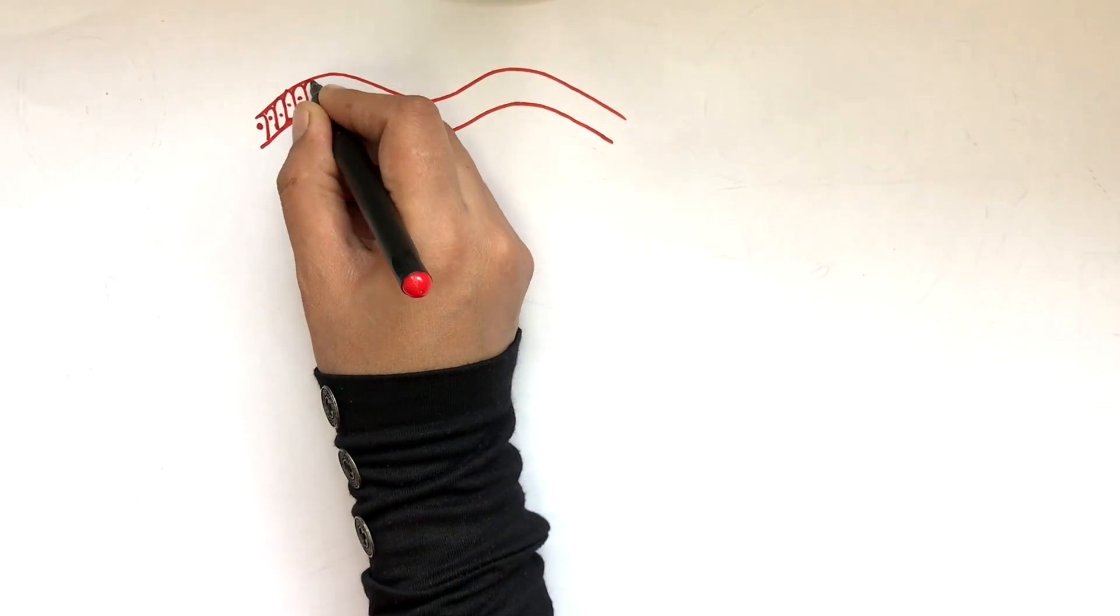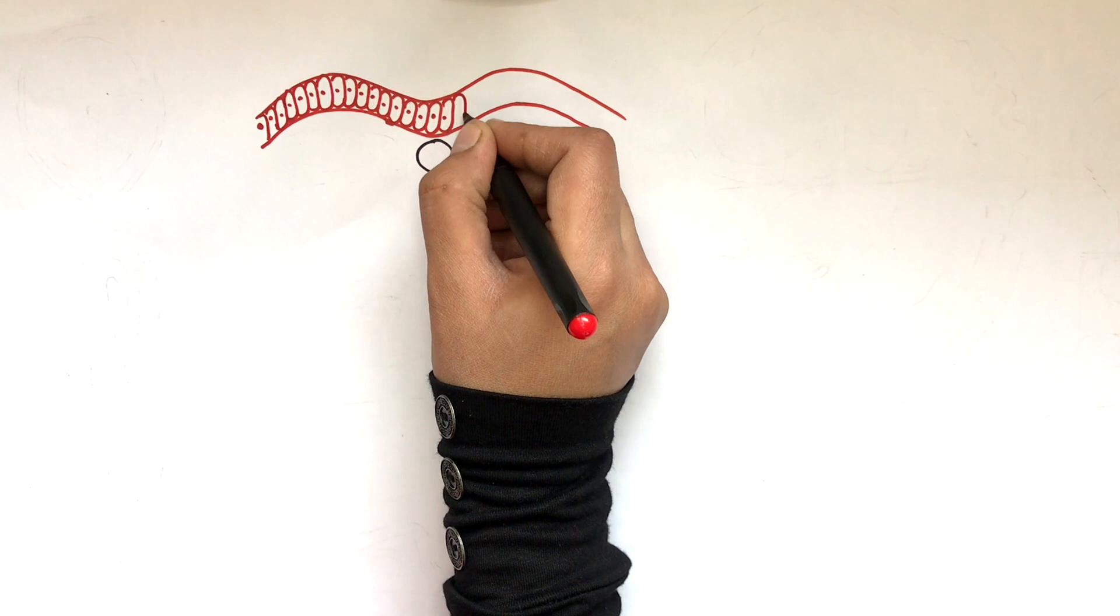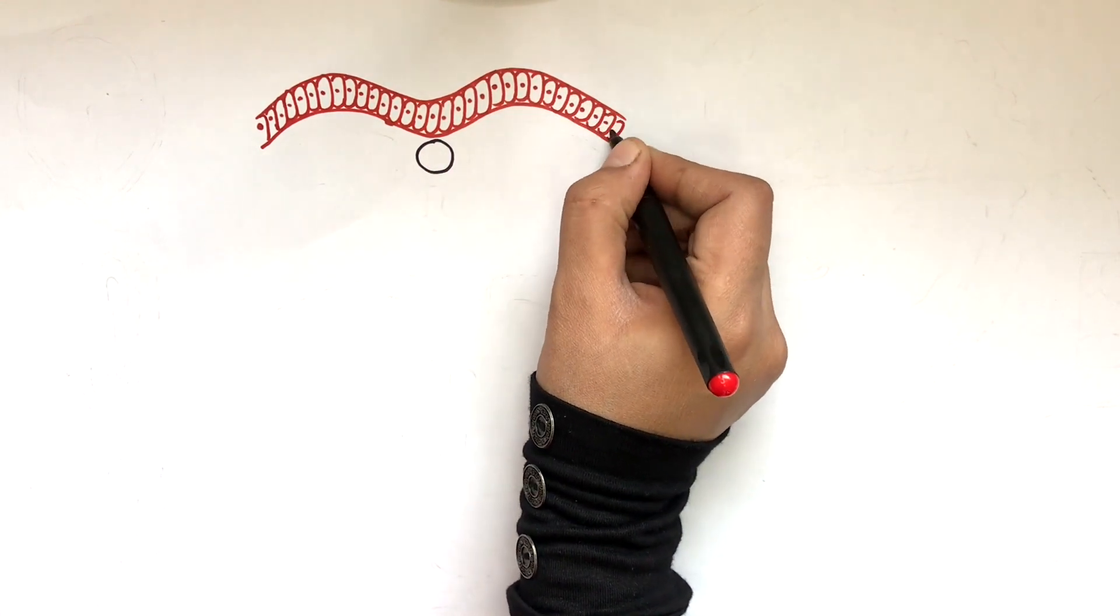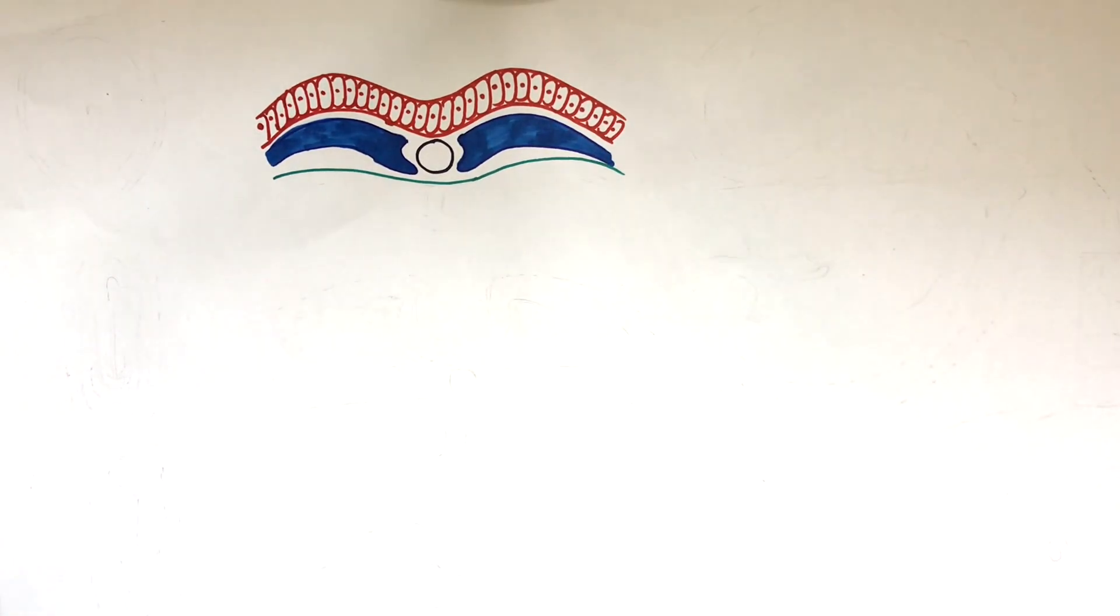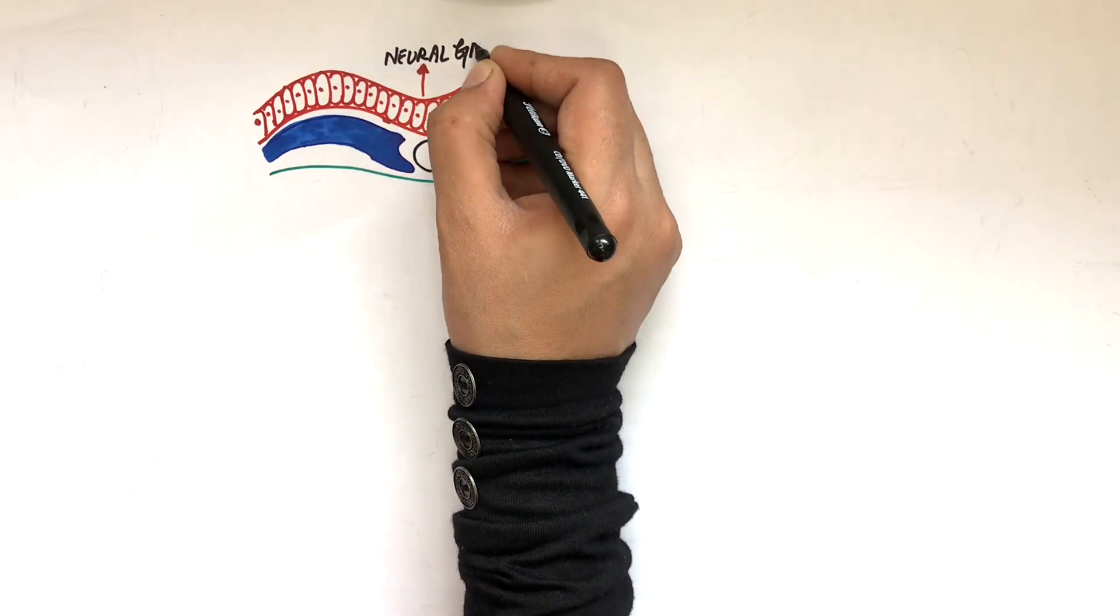Under the influence of the underlying notochord, the superficial ectoderm will proliferate and thicken at a certain area just above the notochord. This area of the ectoderm depresses downwards with its sides raising upwards. The depressed area of this ectoderm is now called the neural groove, and its raised sides are called the neural folds.